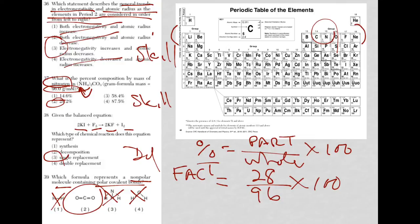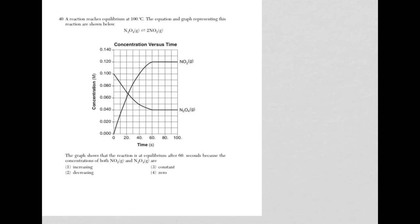So let's check out question 40. We're told we have a reaction reaching equilibrium at 100 degrees. We're given the equation and this graph. So the graph shows that the reaction is at equilibrium after 60 seconds, which is here. Because the concentrations of both NO2 and N2O4, well look what's happening. At that point they're holding steady, which means they're constant. That's the answer.